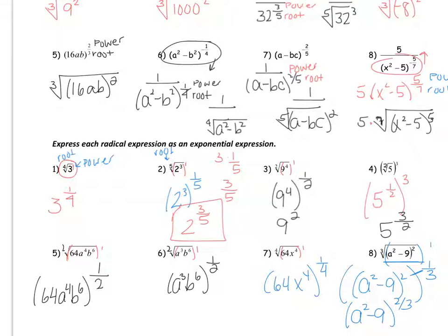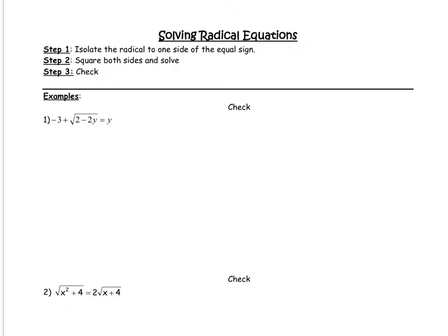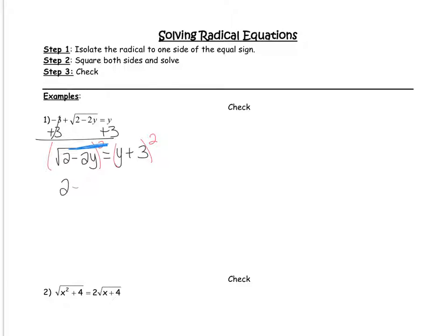That should have been a review from algebra two. Now let's go on to simplifying radical equations — also a review, but let's go through it. Whenever solving an equation with a radical, the first step is to isolate the radical to one side of the equal sign. In this first example, we get rid of the negative three by adding to both sides, giving the square root of 2 minus 2y equals y plus 3. Now we need to solve for y. The opposite of square rooting is squaring, so step two is to square both sides. The square and square root cancel each other out, leaving 2 minus 2y.